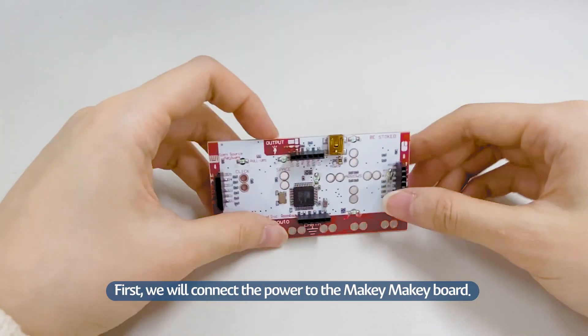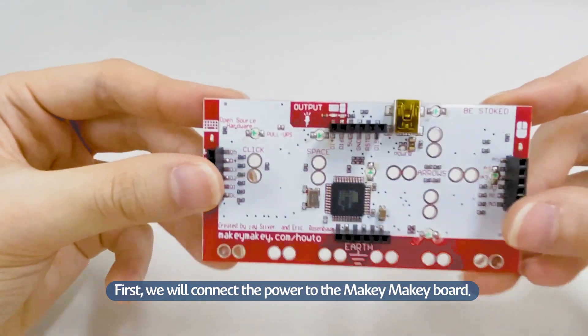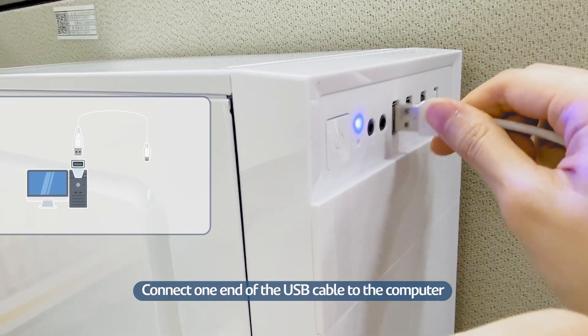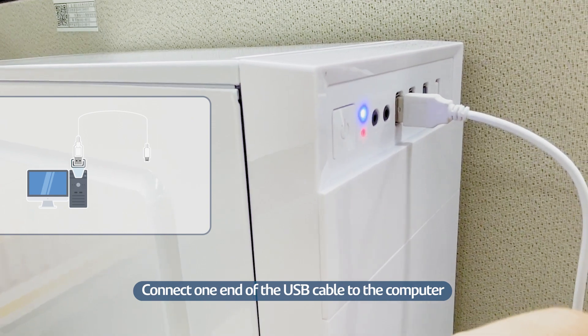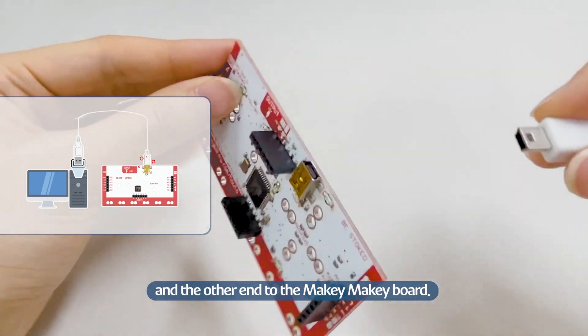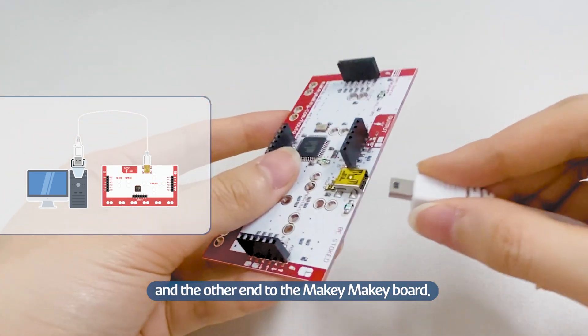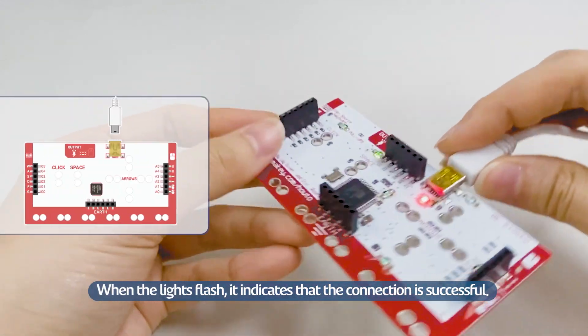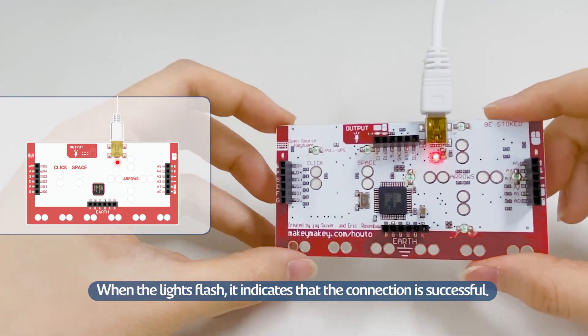First, we will connect the power to the Makey Makey Board. Connect one end of the USB cable to the computer and the other end to the Makey Makey Board. When the lights flash, it indicates that the connection is successful.